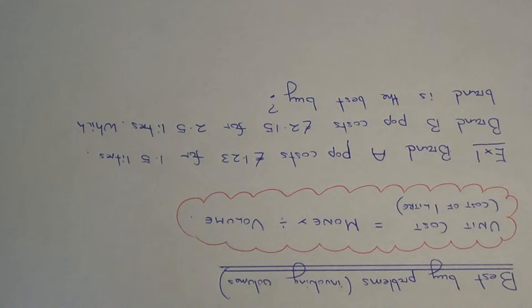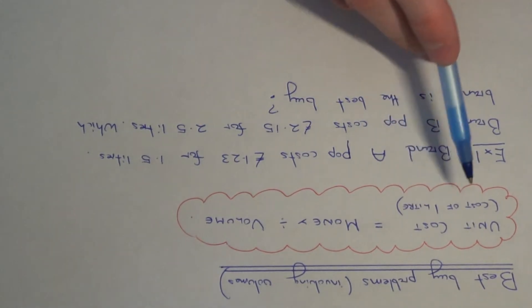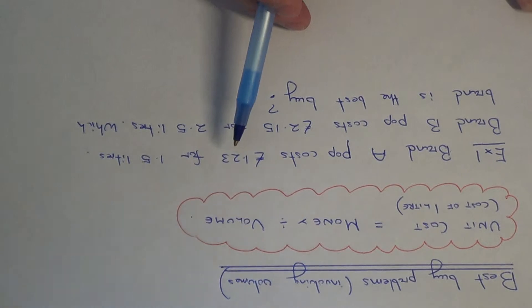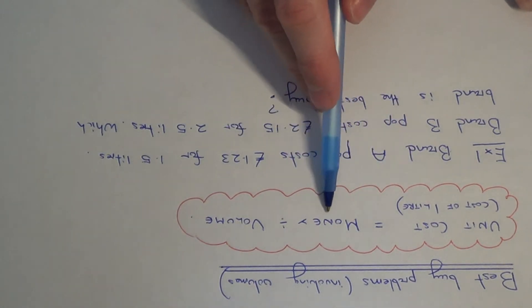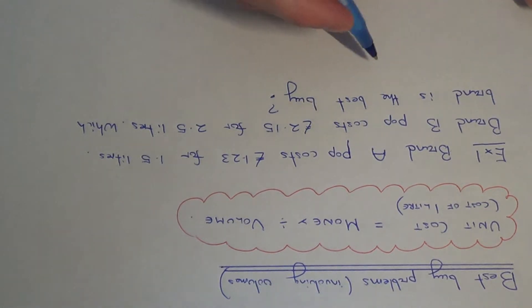To do this we need to work out the unit cost for Brand A and Brand B. The unit cost is the cost of 1 litre of each drink. You can do this by dividing the amount of money by the volume. Let's do that first for Brand A.